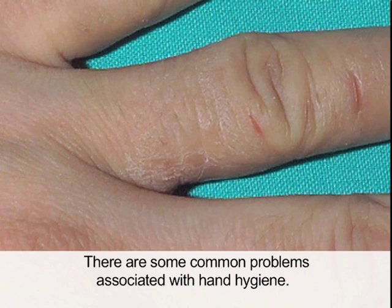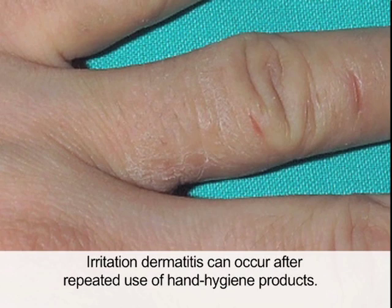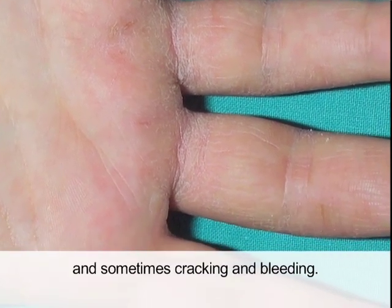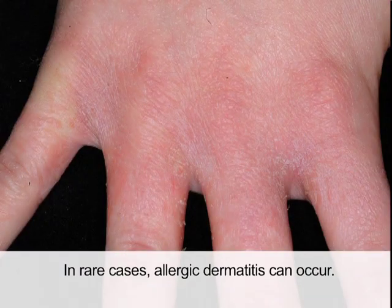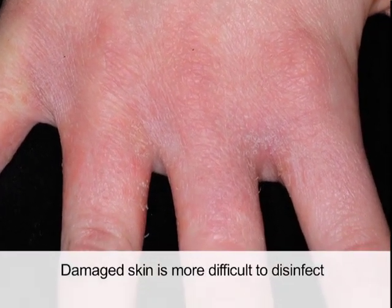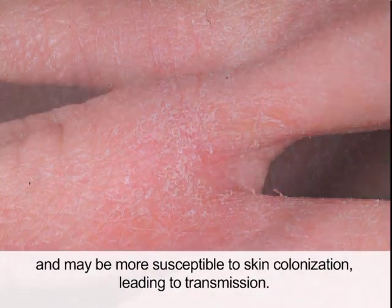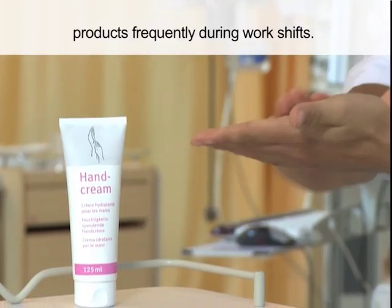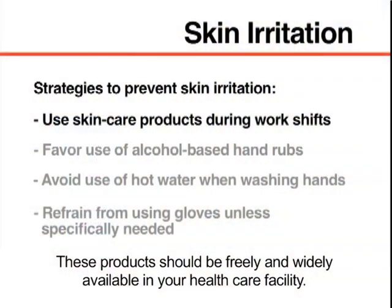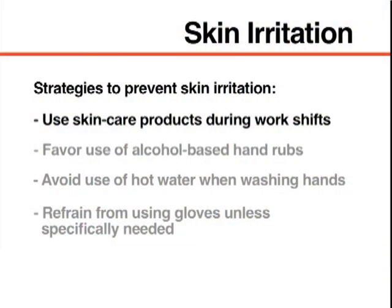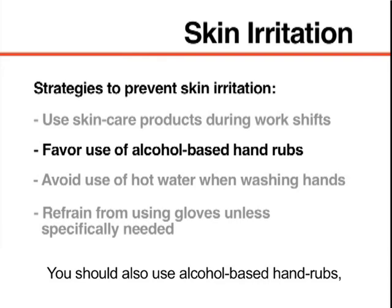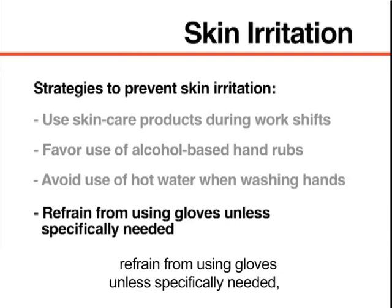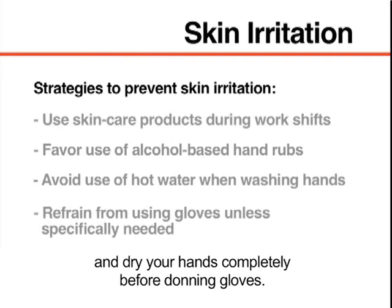There are some common problems associated with hand hygiene. Irritation dermatitis can occur after repeated use of hand hygiene products; common symptoms include dryness, itching, and sometimes cracking and bleeding. In rare cases, allergic dermatitis can occur. Damaged skin is more difficult to disinfect and may be more susceptible to colonization, leading to transmission. To prevent skin irritation, use skincare products frequently during work shifts, use alcohol-based hand rubs, avoid hot water when washing hands, refrain from using gloves unless specifically needed, and dry your hands completely before donning gloves.